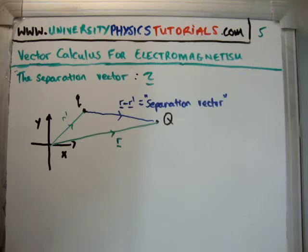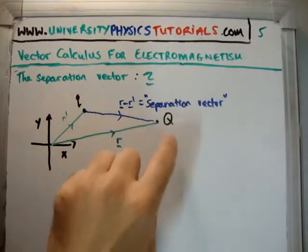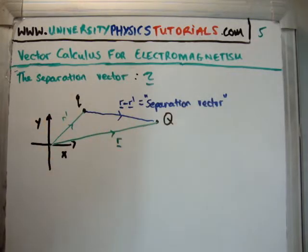So what you need to remember, primed variables are for sources. Unprimed variables are for your detector or for test charges. And we talk about r minus r prime. If you remember, the prime comes last, r minus r prime. You always know that it goes from the source to the test, so you know that the prime is for your source.